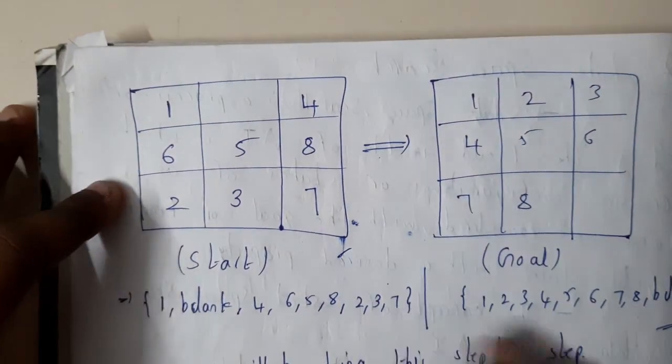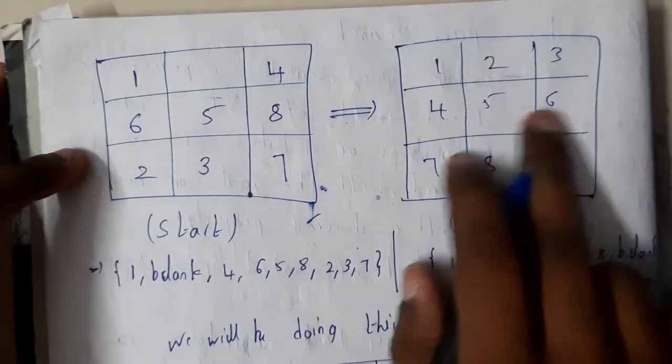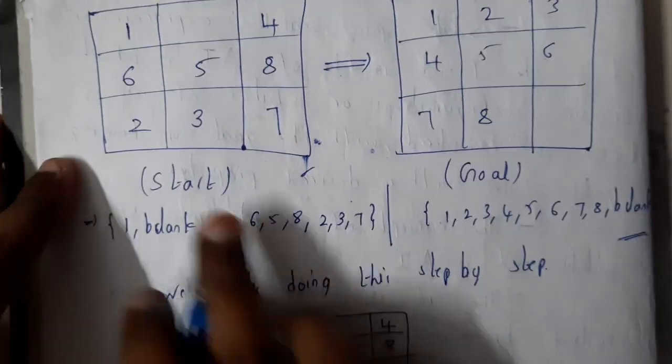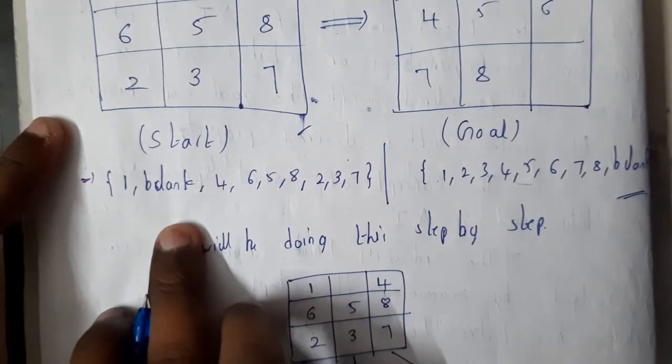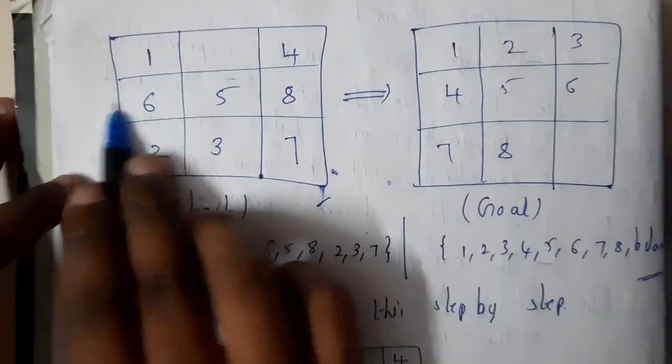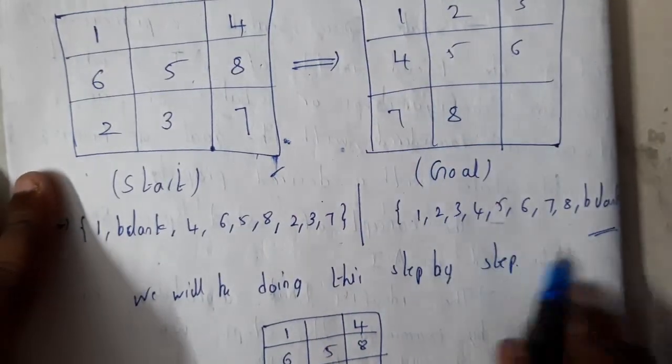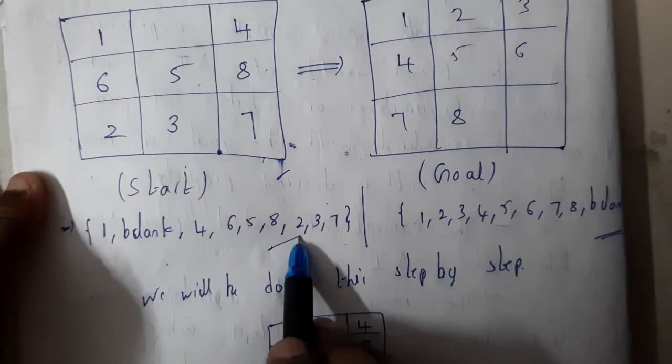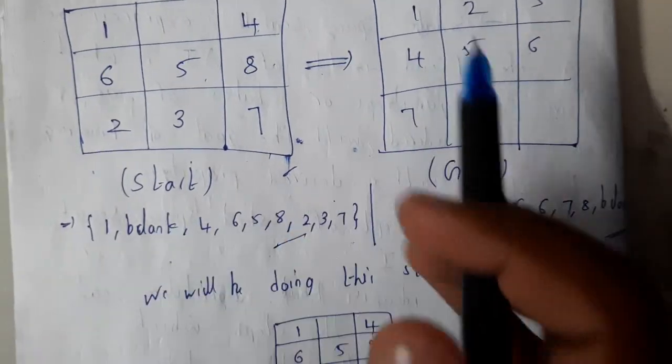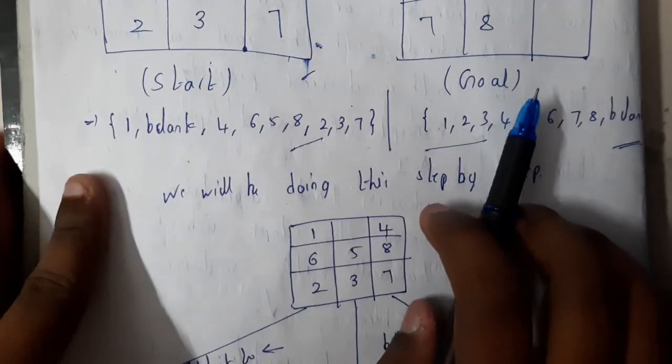Four, five, six, seven, eight. So this is the start and this is the goal. If you represent this here, remember that you should write it in this way: one, blank, four, six, five, eight, two, three, seven. This is your start, and one, two, three, four, five, six, seven, eight, blank is your goal. You need to travel in all different possible ways to get the solution.